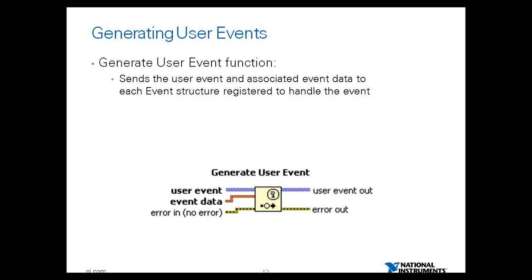Next is generating the user event. The generate user event function is what actually triggers the event. We already created the resource — an event structure configured to be triggered whenever an event is programmatically generated — and defined the data type so the user event can sync data asynchronously. Wire the user event refnum into the generate user event function and supply the event data. Whenever this VI executes, it will cause the event structure to execute the case configured for that user event, and the data passed through generate user event will be available in the data node.